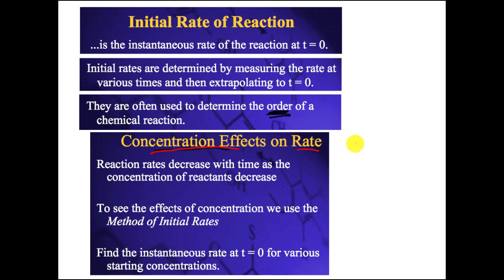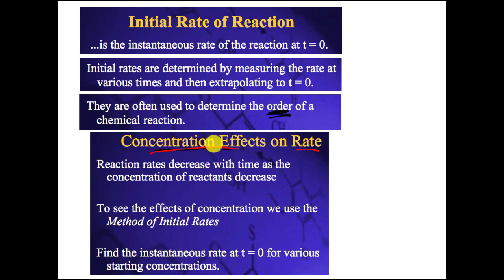If you have a high concentration, the reaction tends to be fast because you have a lot of stuff in the reacting chamber. But not every reaction follows that rule. The reaction rate decreases as concentration decreases for particular reactions. We're going to use what's called the method of initial rates, sometimes known as the isolation method, done at time zero for various starting concentrations.